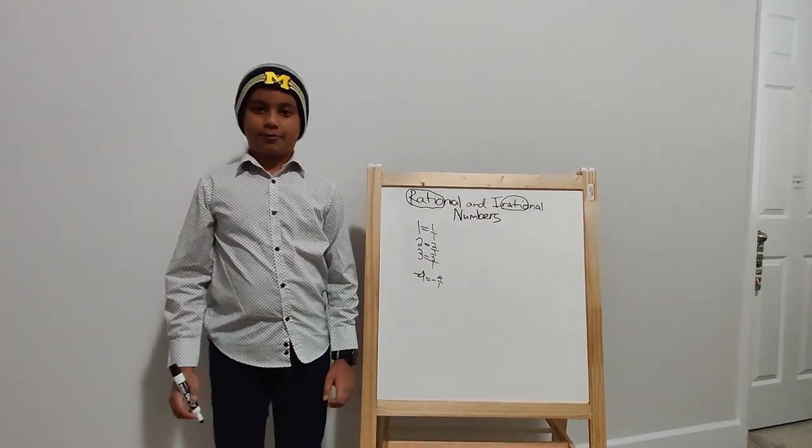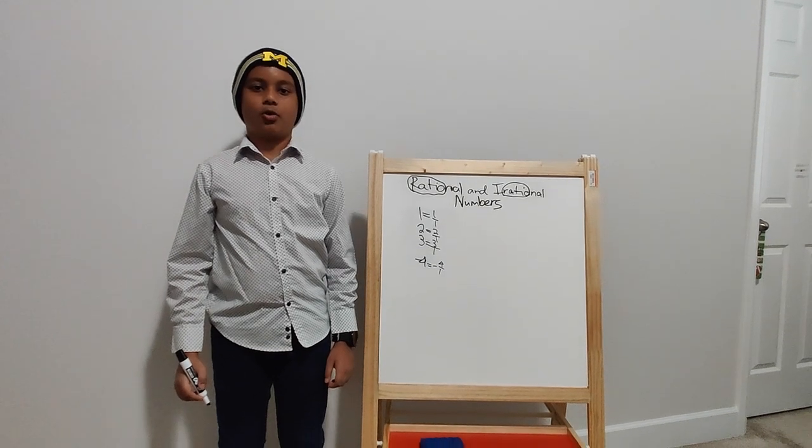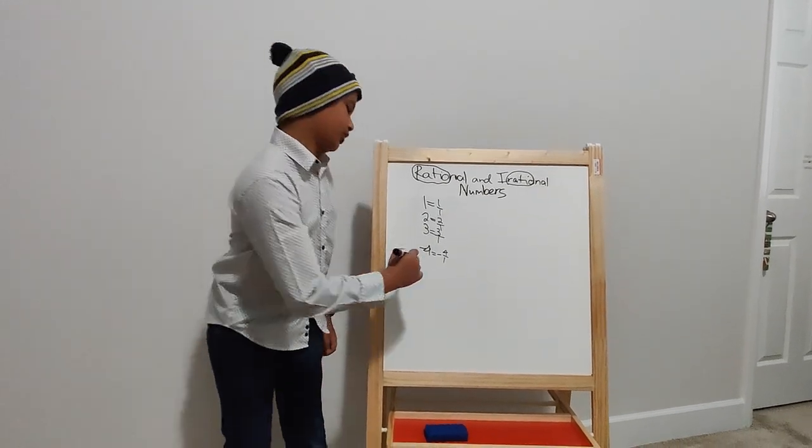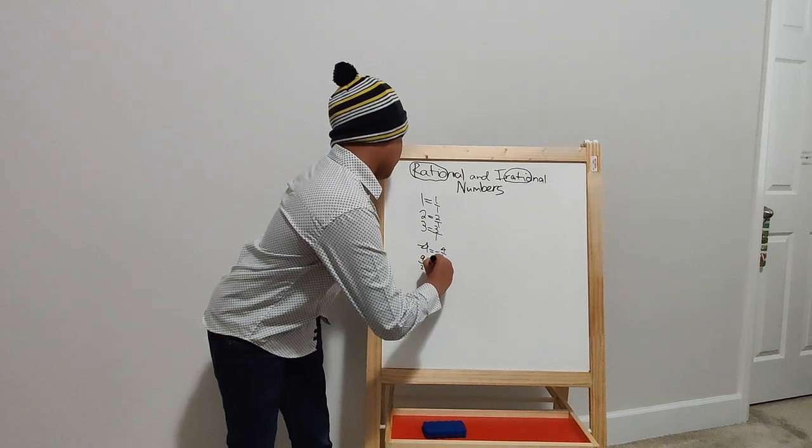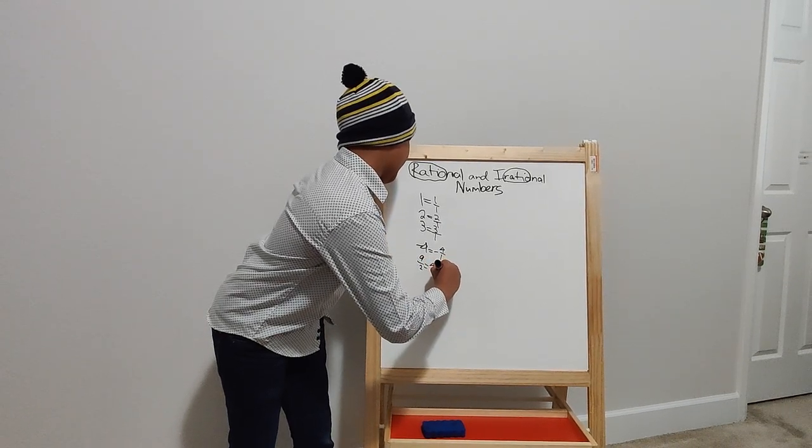But what about fractions? Fractions are also a rational number. 9 over 2 equals 4.5.